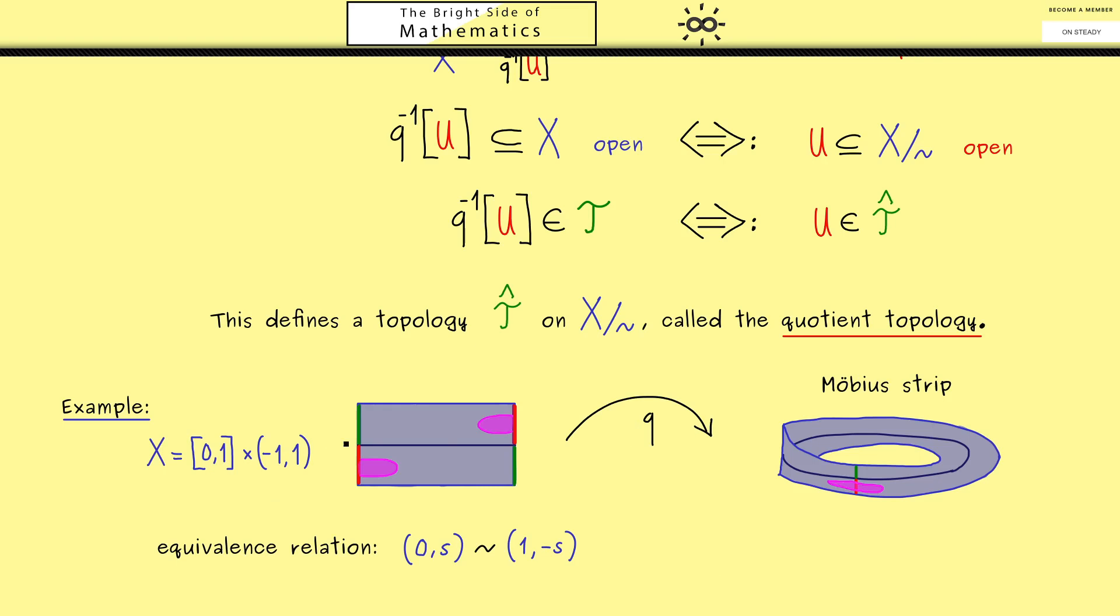Okay, with this you now have a very concrete example of a quotient space. And the next example I want to show you is the projective space, which is also defined using a quotient topology. However, I would say we do this in the next video. Therefore, I hope I see you there and have a nice day. Bye.